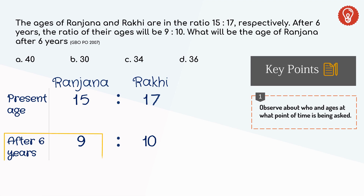Ranjana is representing the number 9, which means our answer should be divisible by 9. Out of all the choices, only 36 is divisible by 9. Hence, D is the right answer.